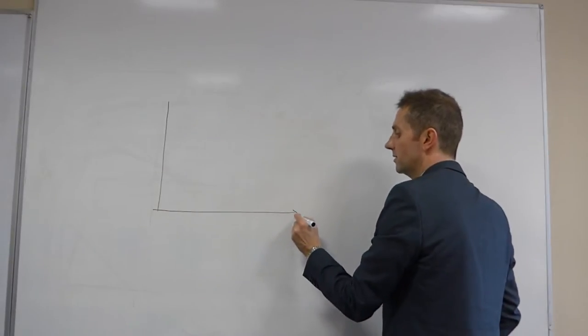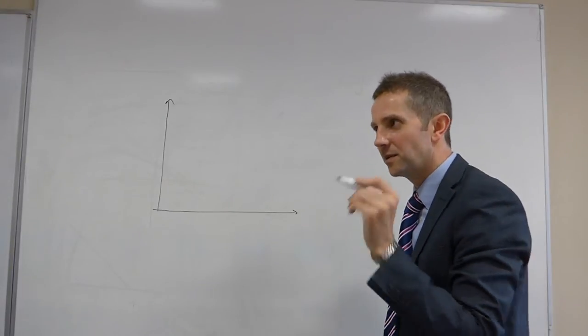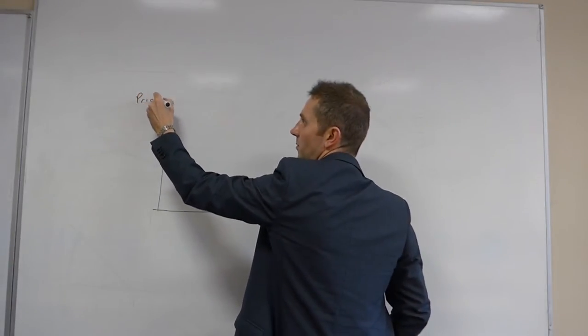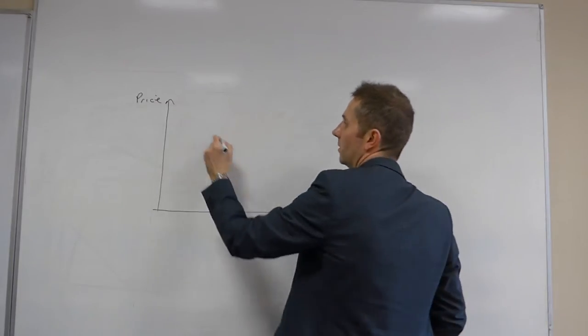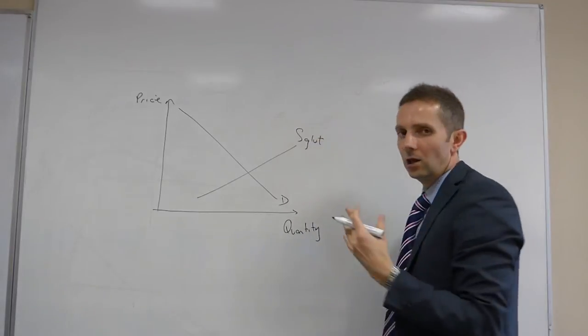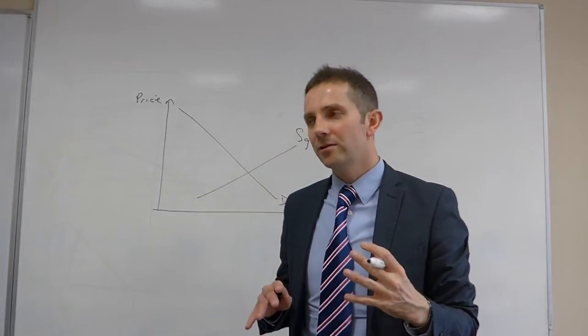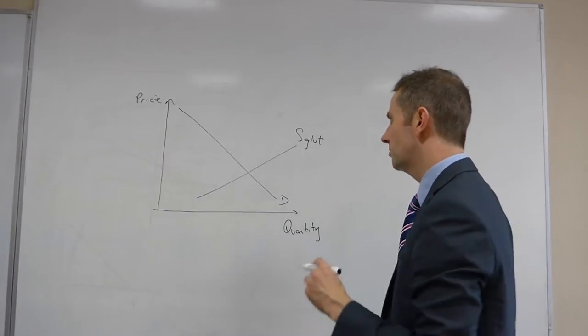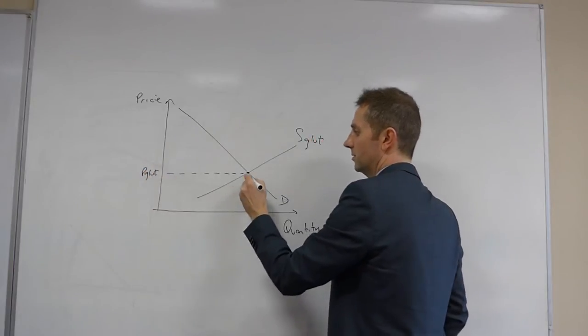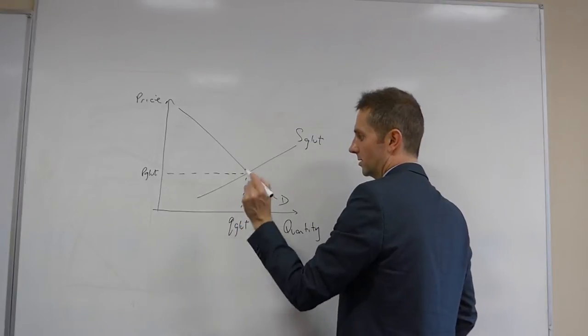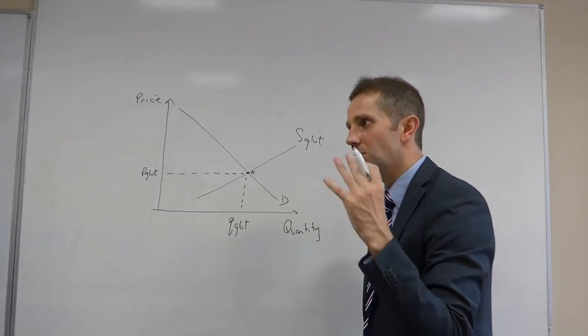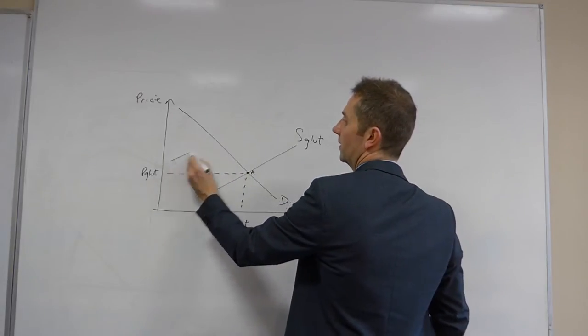Let's get to a few diagrams because diagrams are key when it comes to analyzing buffer stock schemes. Those of you who are using the new OCR September 2015 specification, using the new textbook, this will probably be the diagram which you will be most familiar with. We've got our demand curve, we've got a supply curve down here which we are labeling as supply glut. In other words, this is in a time when the weather is good, the harvest is good, everything in the garden is rosy.